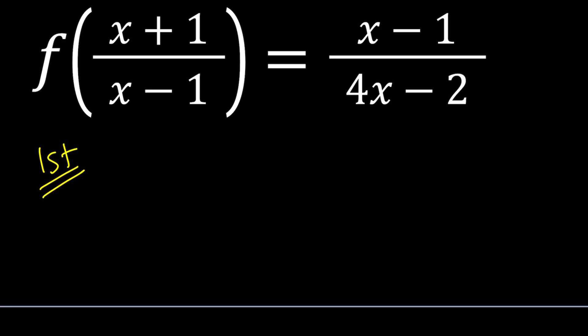This first method is pretty common. Whenever you have f of something, you can just go ahead and replace the whole thing with a single variable. Because our goal at the end is to find f of x, right. But obviously you don't want to set it equal to x.